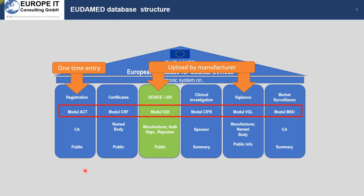The European Commission built the Eudamed database. This database is not only focusing on the UDI requirements — as you see in green in the middle — it also includes a registration module, a certificate module, the UDI module, clinical investigation, vigilance, and market surveillance. As a manufacturer, you are responsible for your registration, the UDI database entries, and also for vigilance.